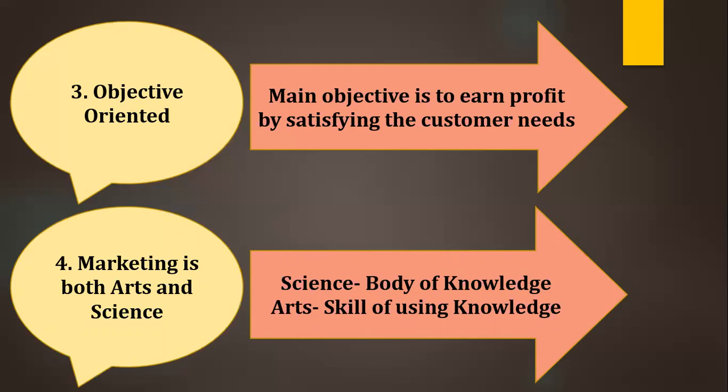The next feature is: marketing is both art and science. Marketing has both the body of knowledge as well as the skill to utilize that knowledge in order to satisfy the customer. That's why it is known as both art and science — it possesses certain knowledge to manufacture goods according to customer needs.